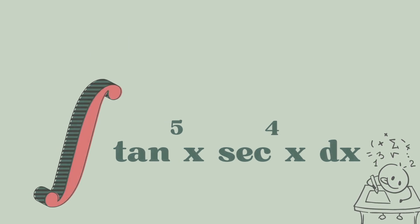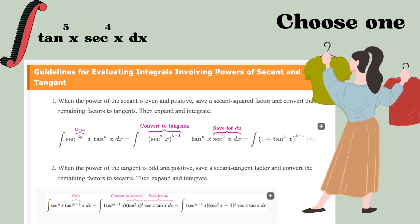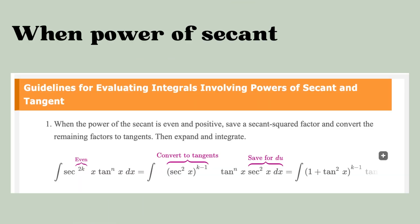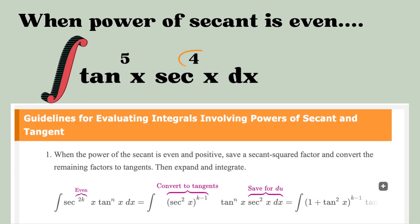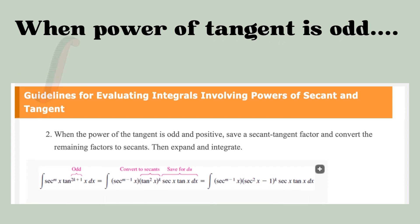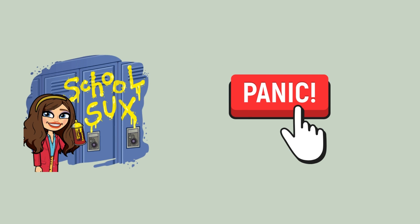I'm going to solve this problem here. The real dilemma is which rule you have to use, because Rule 1 says that if you have positive and even secant — which you do have — you can use Rule 1. And Rule 2 says that if you have a positive odd power of tangent, then use Rule 2. So which one do you need to use? That's the real dilemma.